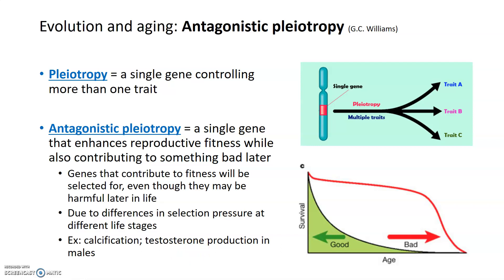One example of this observed in humans is testosterone production. There is a gene that contributes to testosterone production in males, and testosterone is obviously necessary for sexual reproduction. Having adequate levels of testosterone can contribute to fitness and help those males reproduce and pass their genes to the next generation — testosterone is essential for reproductive fitness. But unfortunately, later in life as males age, high testosterone production can actually lead to some forms of prostate cancer. So there's antagonistic pleiotropy with a gene for testosterone: it helps with reproductive fitness early, then can lead to cancer later on. Because there's no natural selection acting later in life, this gene's expression remains the same and is continually selected for in a population.